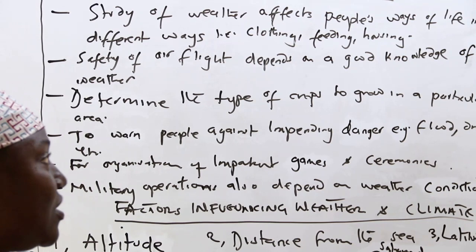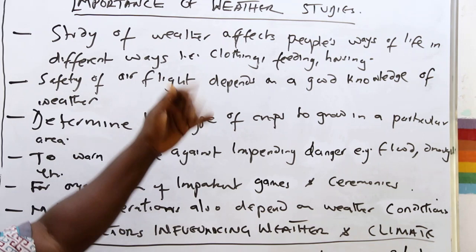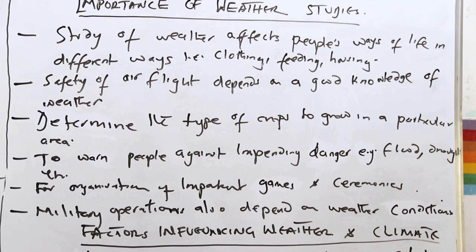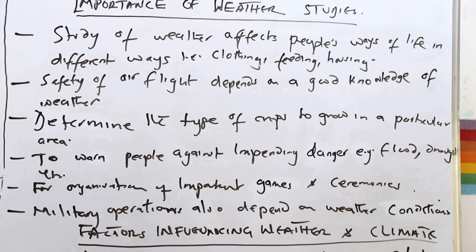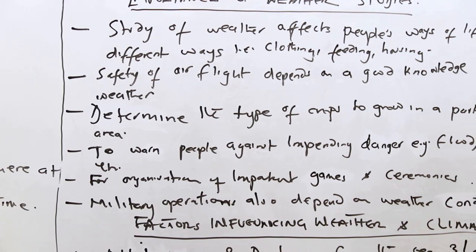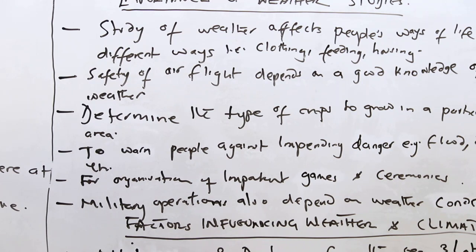For example, those people found in the polar regions of the world — areas of cold temperature — normally dress based on the condition of the atmosphere in their area. And those people found in the tropical regions of the world equally dress based on the type of weather in their area. And that is why the knowledge of weather and climate is very important.